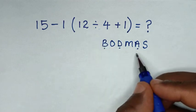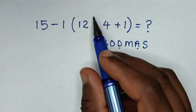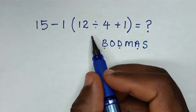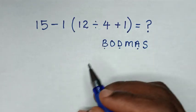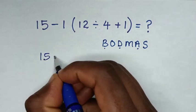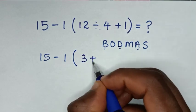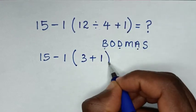From the division: 12 divided by 4 which is 3. So it will be 15 minus 1 bracket, 3 plus 1 bracket.